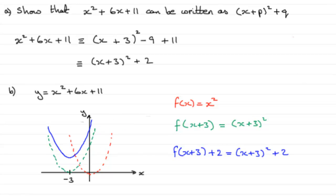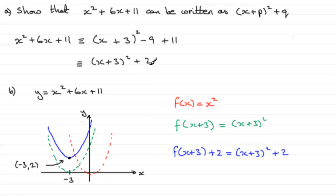The minimum point — while not always asked for, it does occur in other questions — this minimum point here would be at minus 3, 2. And where the graph crosses the y-axis, that's going to be when x is 0. When x is 0, you can see you get 11. Or if you substitute 0 in: 3 squared is 9, plus the 2 is 11. So this point here is at 11 units up on the y-axis.